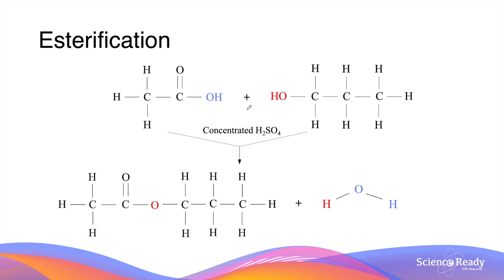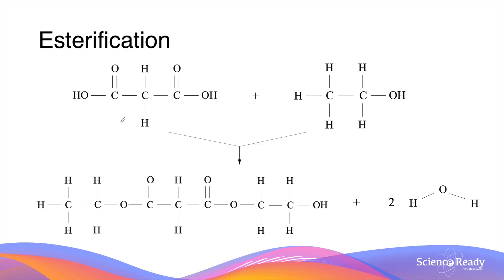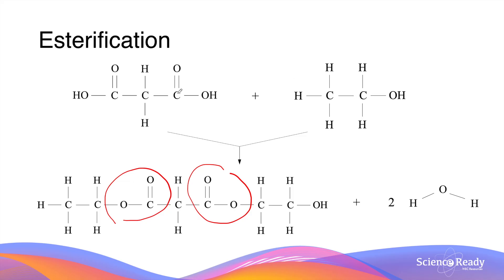A quick reminder of esterification: a carboxylic acid reacts with an alcohol to produce an ester and a water molecule. Now, if the carboxylic acid molecule has two carboxylic acid functional groups, this results in the formation of two ester bonds, as the alcohol molecule can react with both ends. The formation of two ester functional groups also results in two water molecules.